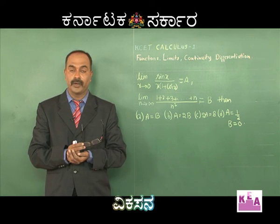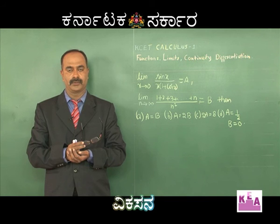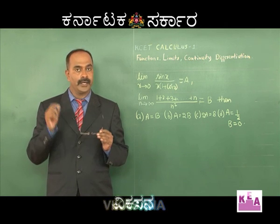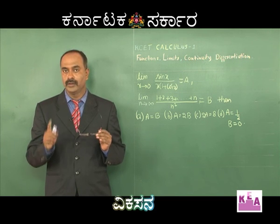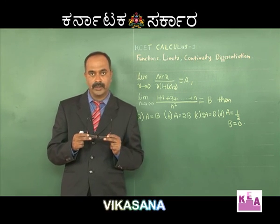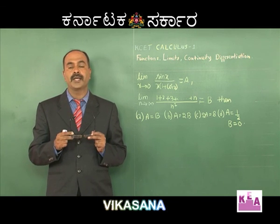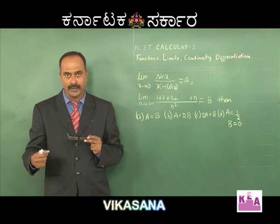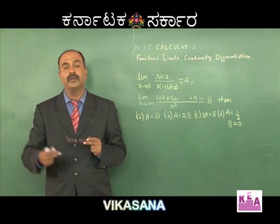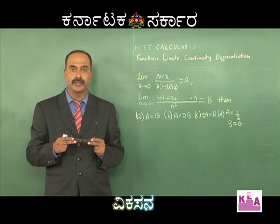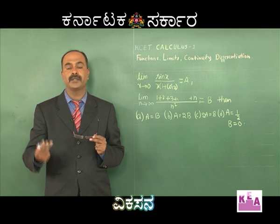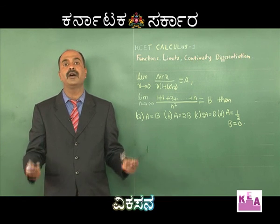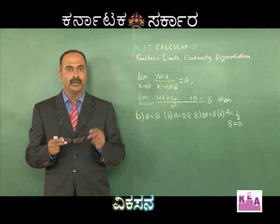Dear students, you would have understood the basics of limits in first PUC. I hope your memory is sharp enough to recall: limit x→0 of sin(x)/x = 1, limit x→0 of tan(x)/x = 1, limit x→0 of sin(ax)/sin(bx) = a/b, and similarly for tan(ax)/tan(bx) or mixed combinations — all equal a/b.